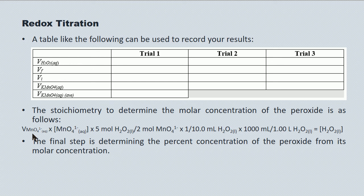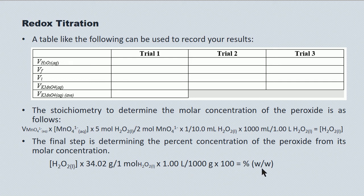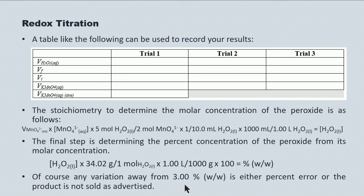Our final step is to convert from moles per liter into percent concentration for the peroxide. The calculation uses the molar concentration in mol/L, multiplied by the molar mass of the peroxide over 1 mole, then multiplied by the density of the solution (1 L per 1000 g), leaving grams per gram times 100 — giving percent weight-to-weight. Any variation away from 3.00% w/w is either experimental error or indicates the supplier has prepared a peroxide solution that is either too dilute or too concentrated — that'll be for you to decide in your discussion.